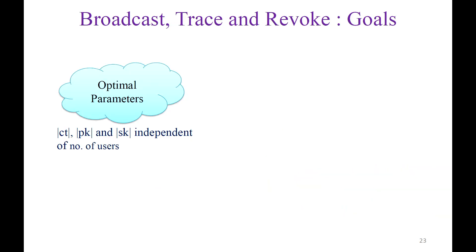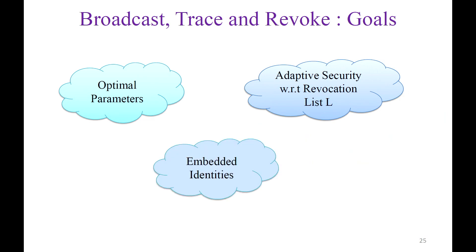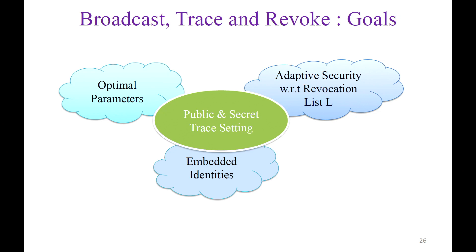The goals for our broadcast trace and revoke scheme are: first, optimal parameters — ciphertext, public key, and secret key sizes independent of the number of users or the set of targeted users. Second, adaptive security with respect to revocation lists, giving the adversary flexibility to output the list after seeing the public parameters and secret keys. Third, embedded identities. We want to achieve all three properties in both the public and secret trace settings.